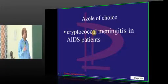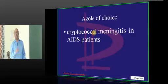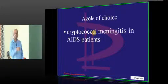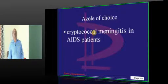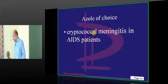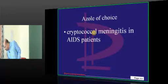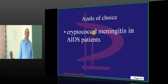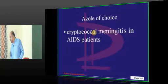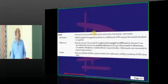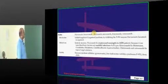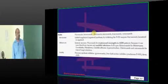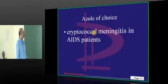Which azole can cross the blood-brain barrier, and hence is the azole of choice? Fluconazole — very good. Even our online students say fluconazole. Sunine says itraconazole, which is not correct. Fluconazole is the one typically used for cryptococcal meningitis.